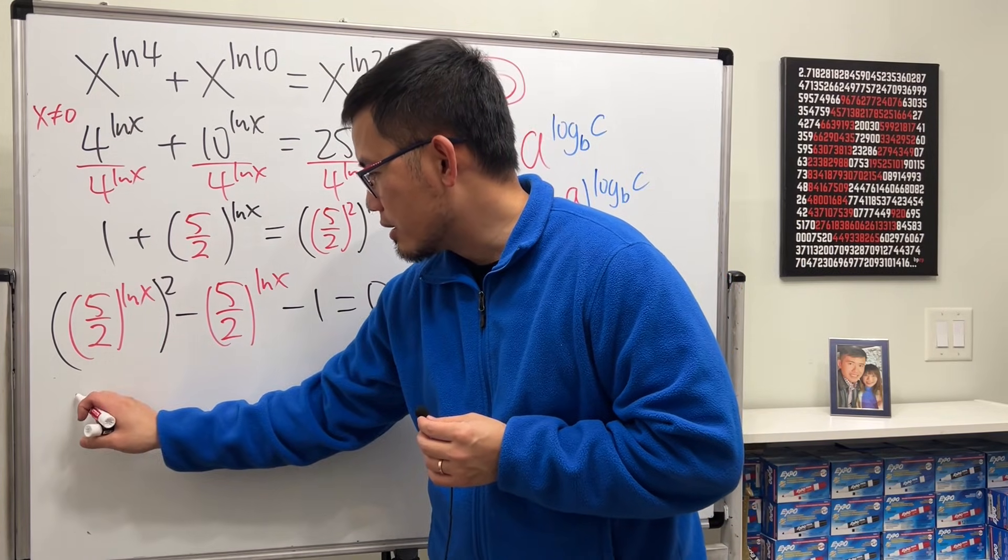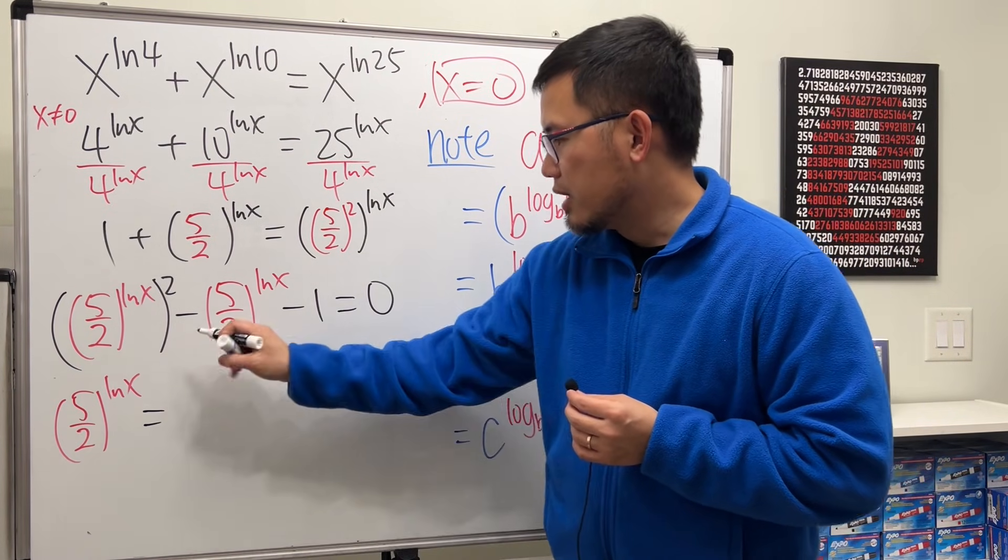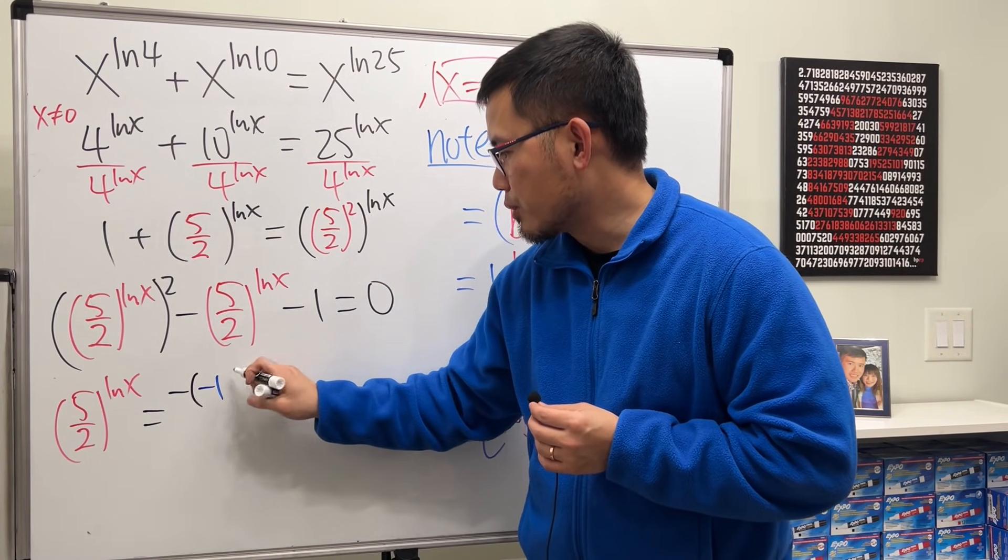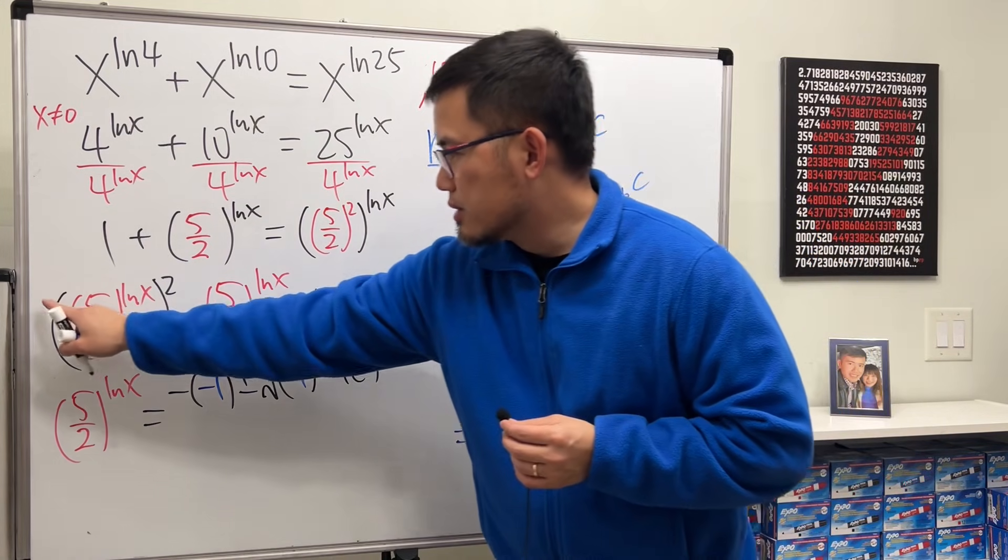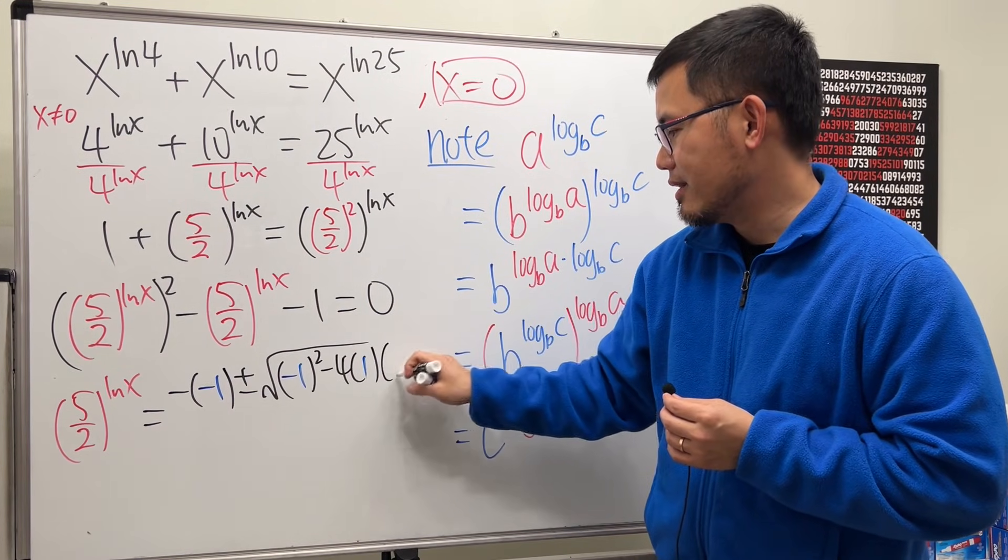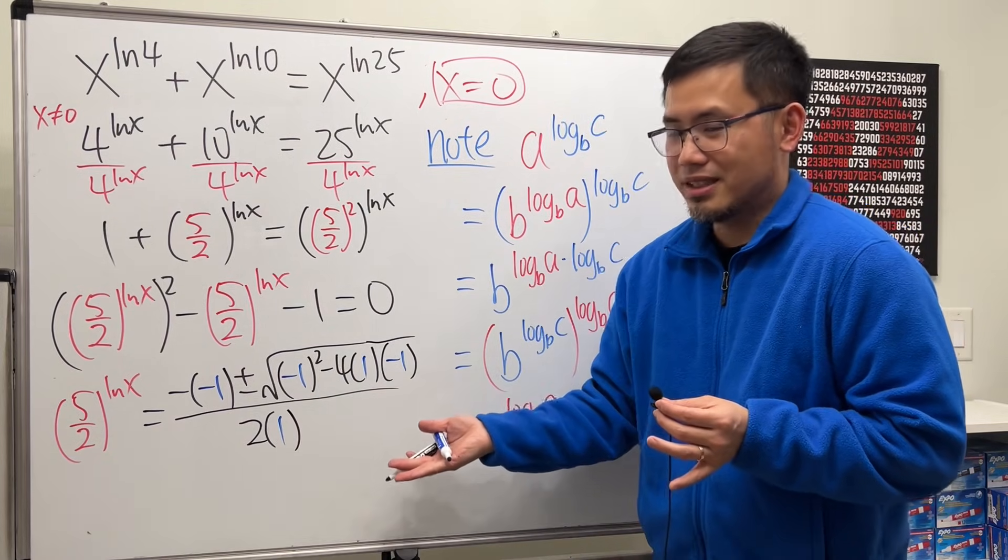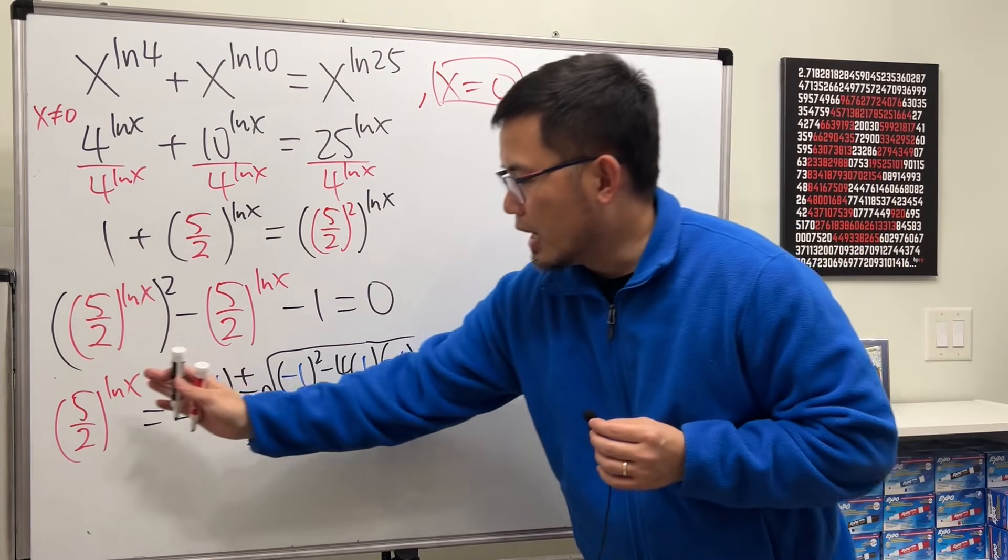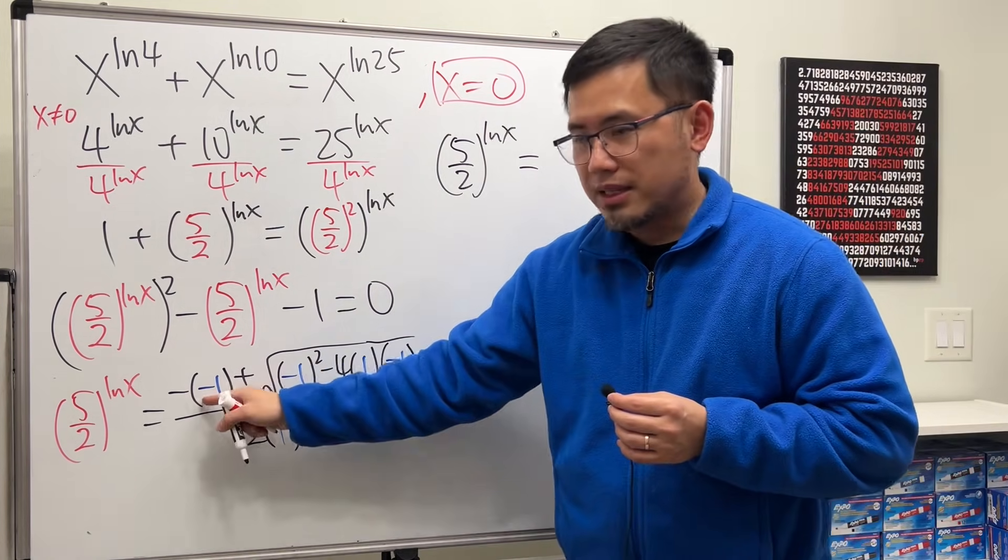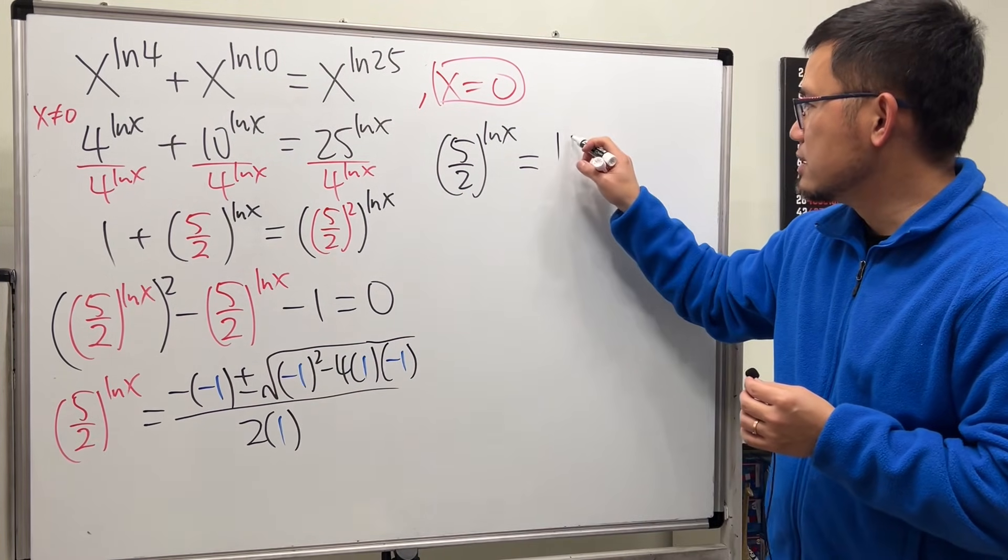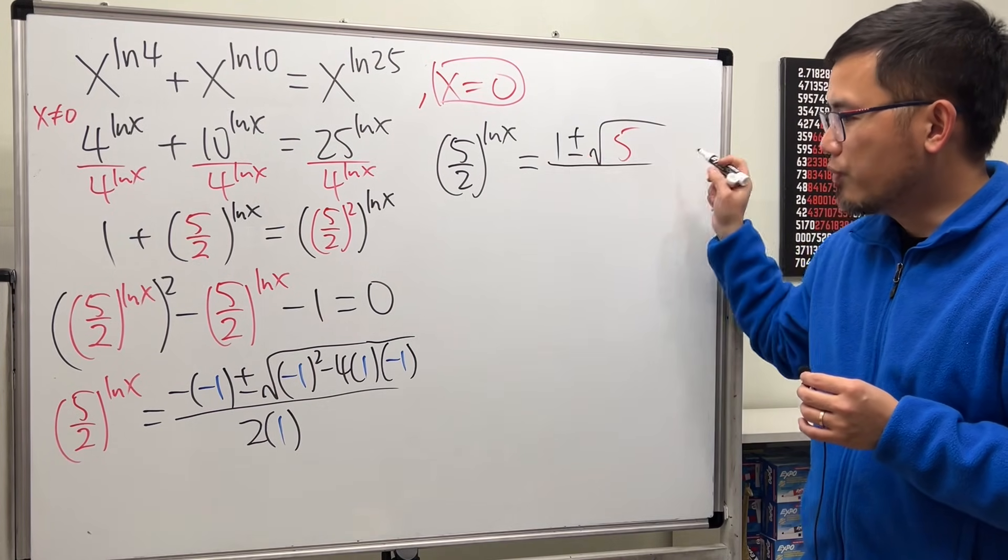Let's solve this by using the quadratic formula. So the 5 over 2 raised to the Lnx power will be equal to negative b. b is negative 1, and then plus or minus, square root of negative 1 squared minus 4. a is 1, c is negative 1. And then all over 2 times 1, the a value right there. So we have 5 over 2 for the base, raised to the Lnx power, and that is equal to positive 1 plus or minus square root. This is 1, and then this is plus 4. So 1 plus 4 is 5 inside here, over 2.